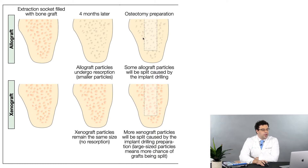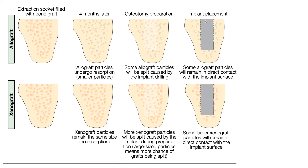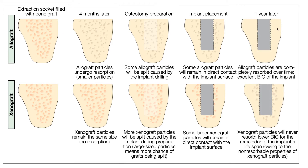When we create osteotomies and start cutting through bone, we're going to cut through some of the particles that are left over. If you pack any of these grafts, you're naturally going to cut through some particles. Then when the implant goes in, we're looking for bone-implant contact — good BIC. With xenografts, the more particles that are hanging around in this area, the more that come in contact with the implant surface as it's screwed in.